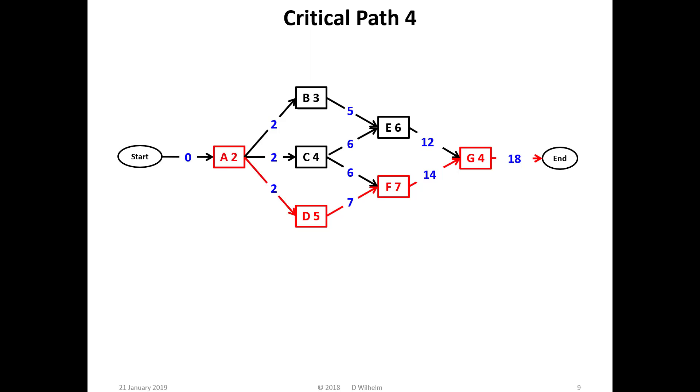Task D only has one prerequisite, so task A is on the critical path, and the critical path is expressed as A, D, F, G.